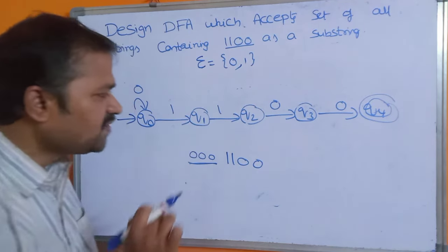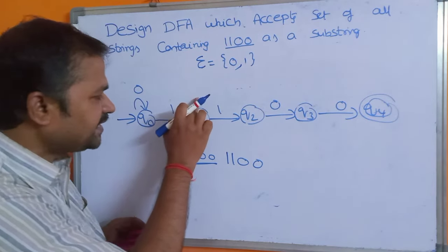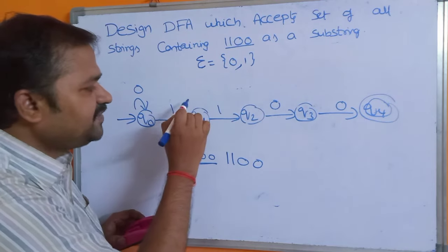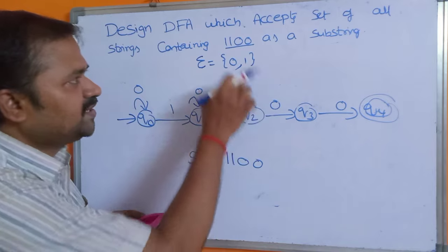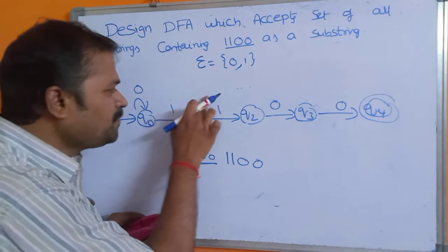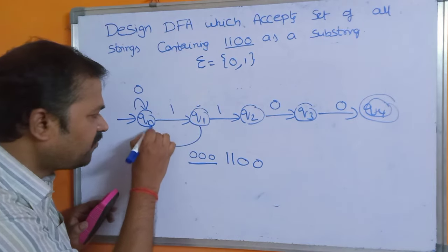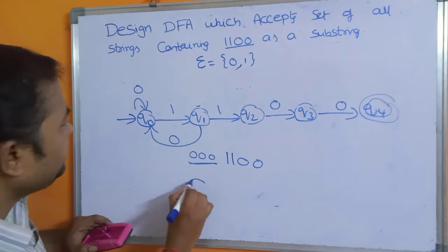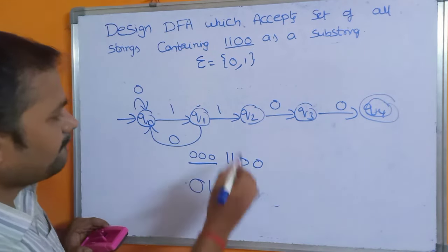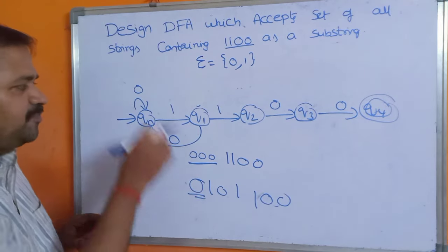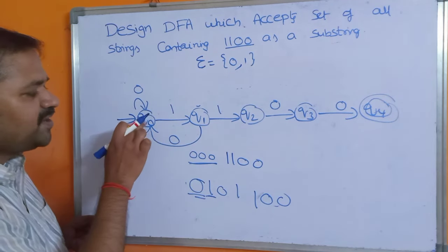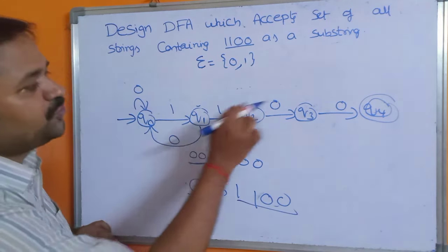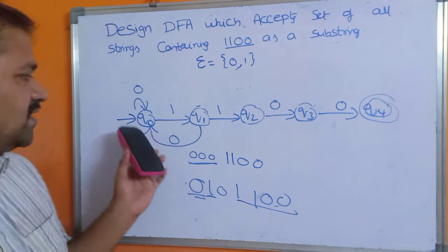On Q1, we have to apply 0. If we take a self-loop on 0 at Q1, the substring would become 1010, but the required substring is 1100. So we have to backtrack to the previous state. Applying 0 on Q1 goes back to Q0. For example, consider the string 010 1100: 0 keeps us at Q0, 1 moves to Q1, 0 goes back to Q0, then 1100 leads us to the final state.